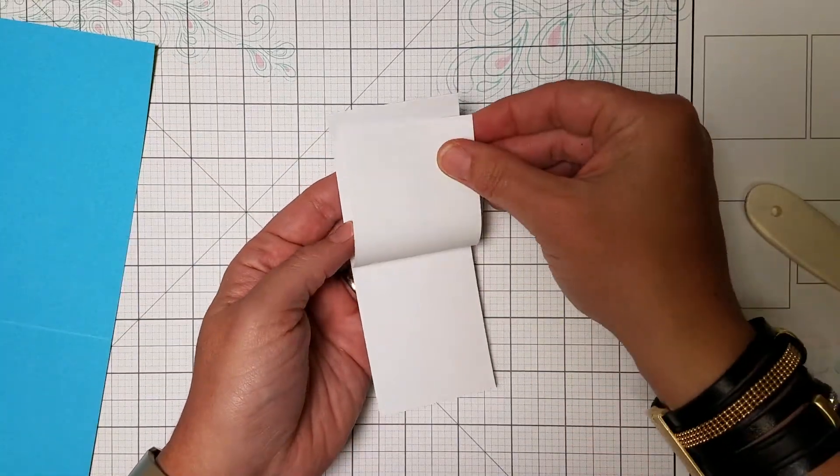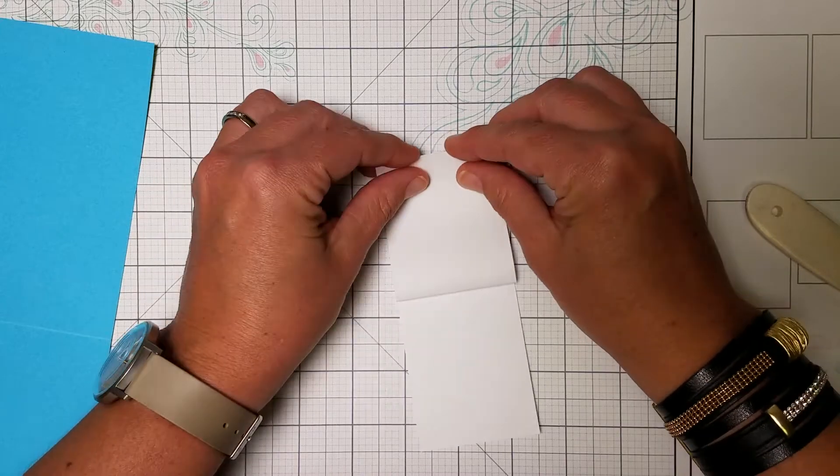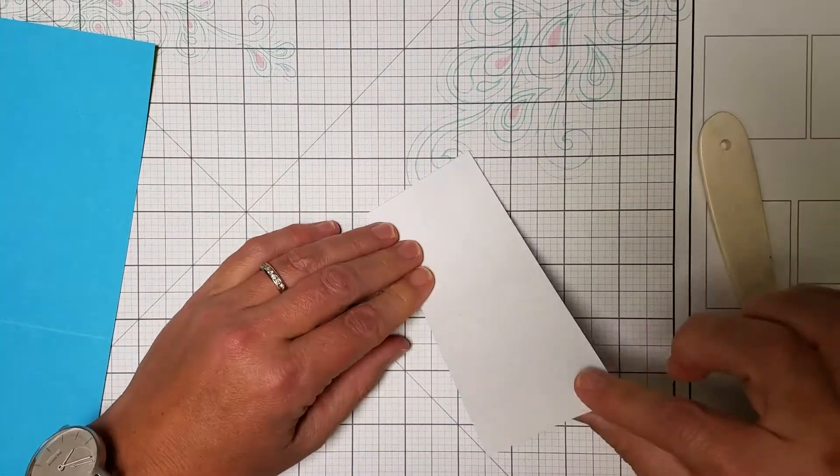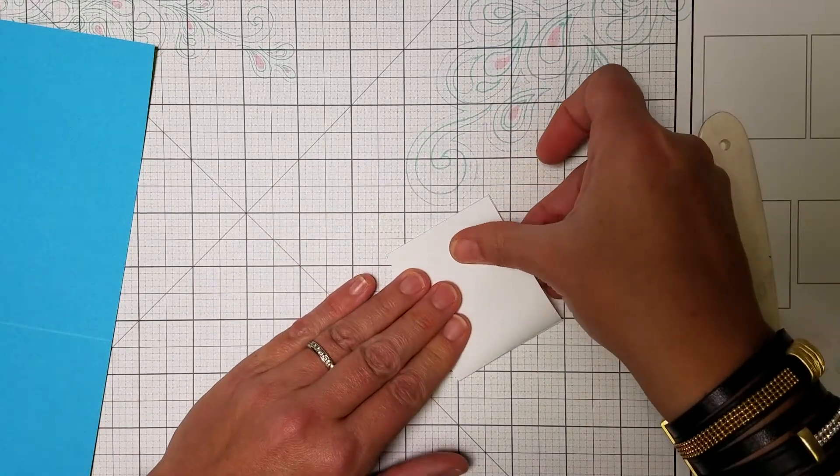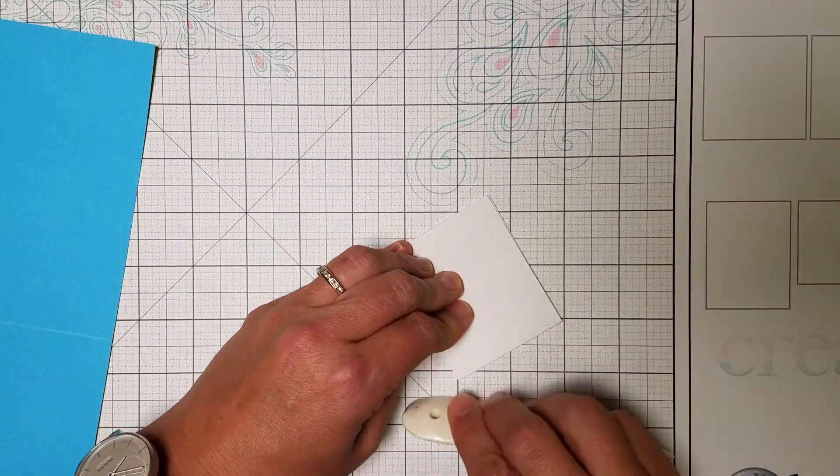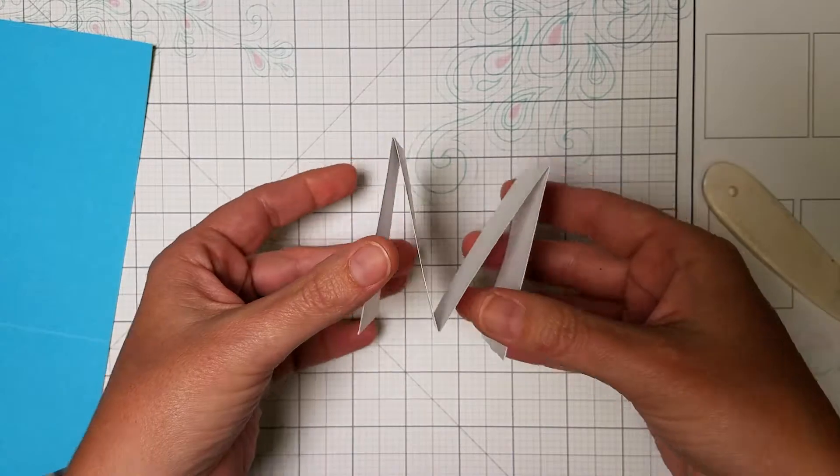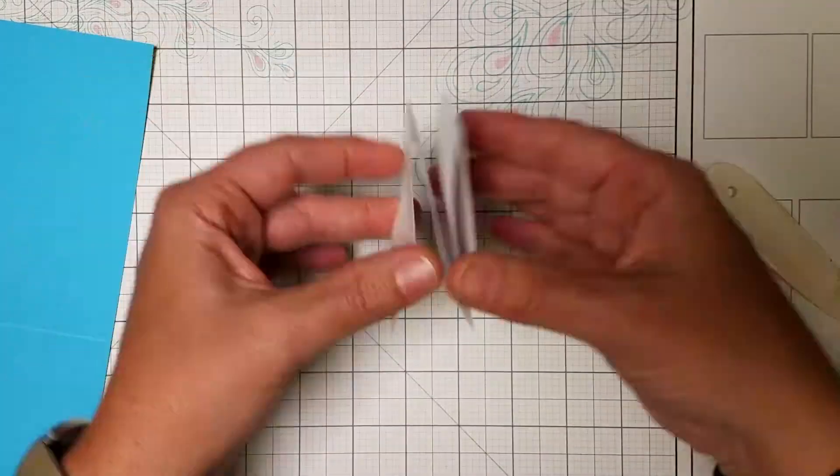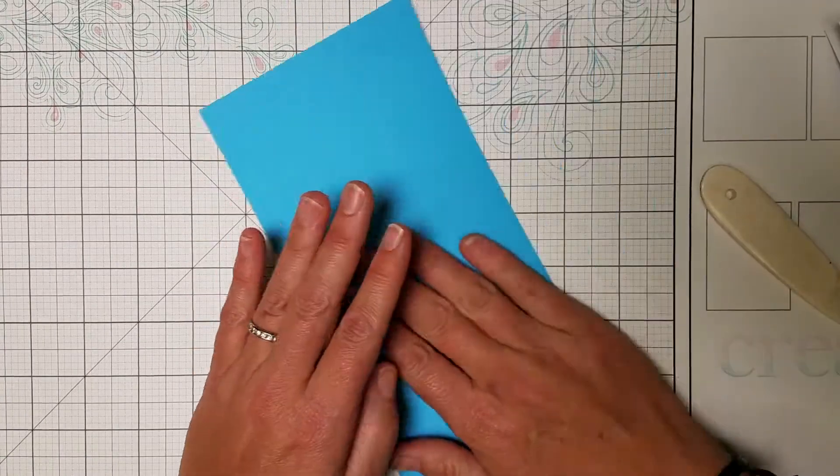Now I've got the free edge here which I'll then bring up to the mountain fold and burnish, and then flip up the other free edge bringing it up to the mountain fold. And now I have a little accordion that looks like the letter M for Morris.